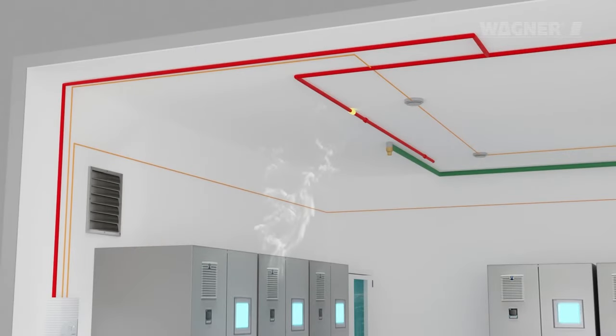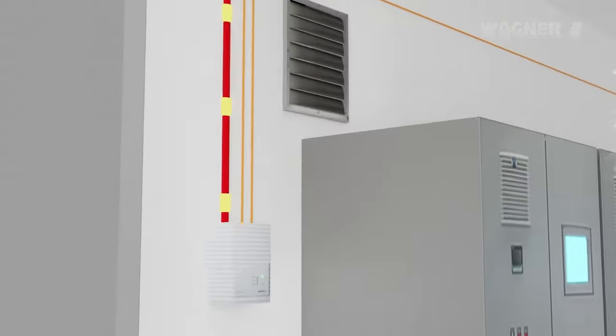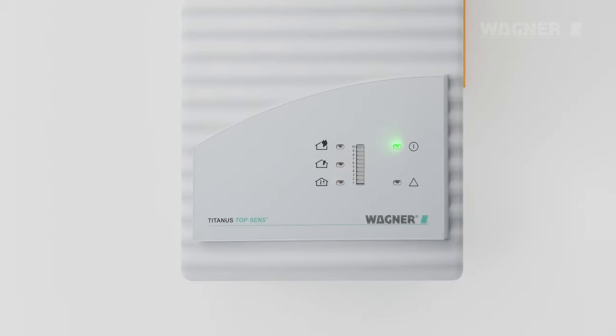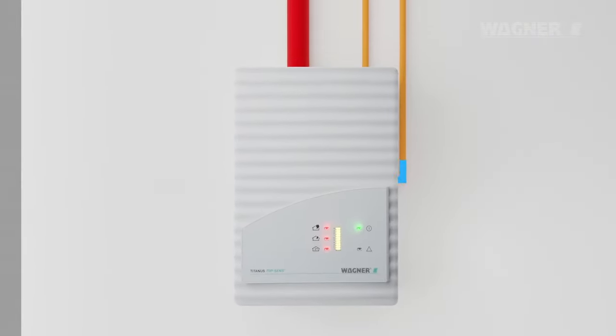In the event of a developing fire, even the smallest smoke particles should be aspirated by the aspiration pipe system and fed to the Titanus aspirating smoke detector so that a fire can be detected at an early stage.